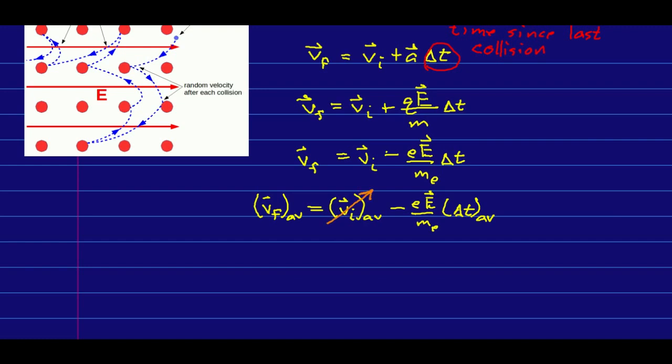And so, the average post-collision velocity of the electrons is zero. And so, this average velocity of the electrons in the metal is what we call the drift velocity. And we call this average time since the last collision tau, the collision time.